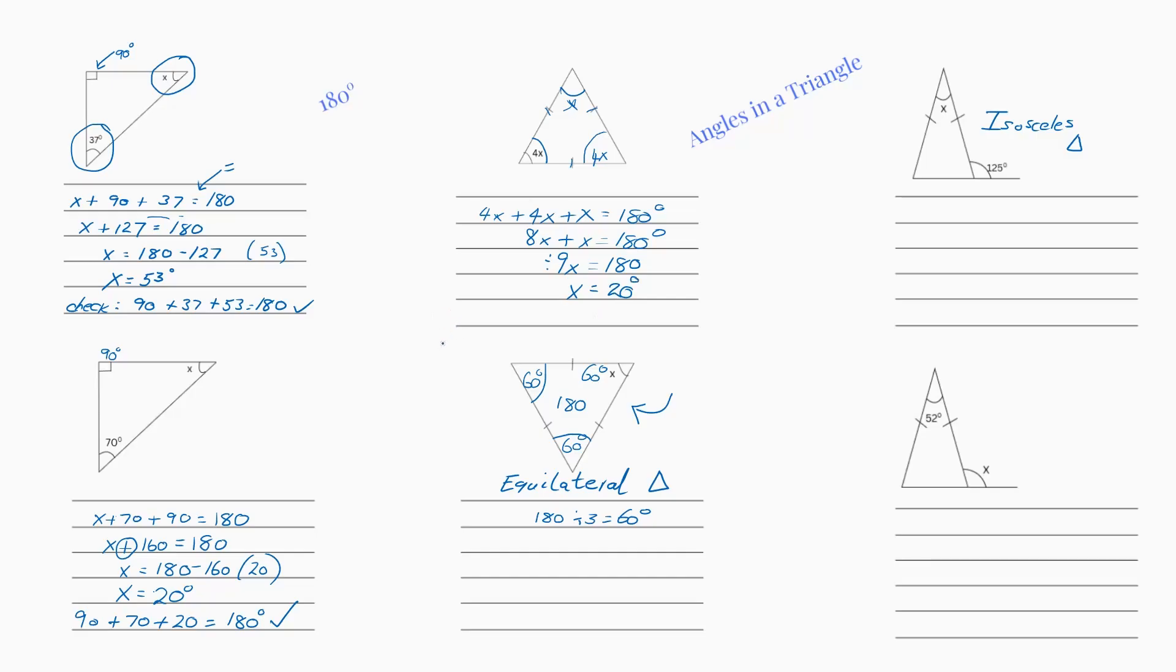And that's it. And obviously you can check your answer. So we have 4 times 20, then we have another 4 times 20, plus 20 that we just worked out. That would give us 180 degrees. So I know I've got that answer right.